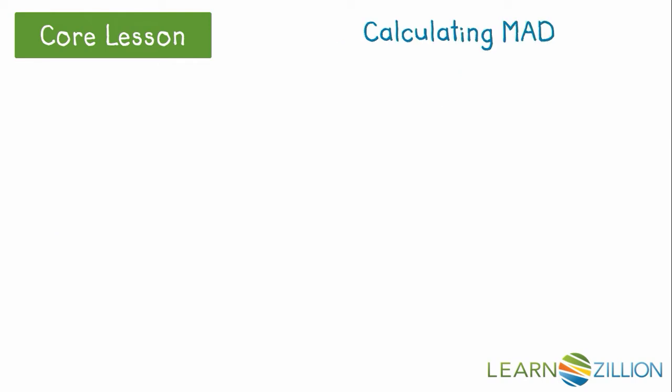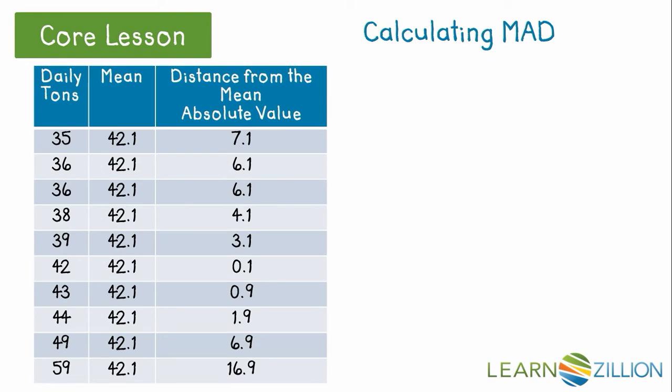Let's look at the calculation for MAD so that we can compare it to that of standard deviation. I have my data in a table to help organize my calculations. The first column reports the data, the second column is the mean, and the third column is the difference as the absolute value between the mean and the reported daily tons.